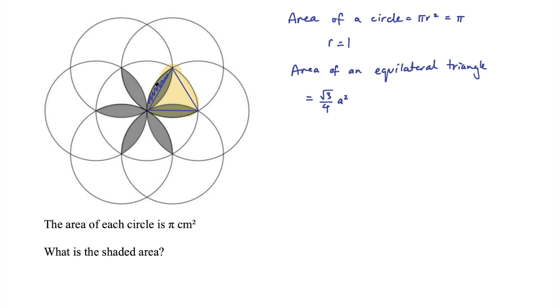In this case, the side of the equilateral triangle is the radius, which is one, so a is one. Therefore, the area of this triangle is just √3/4.